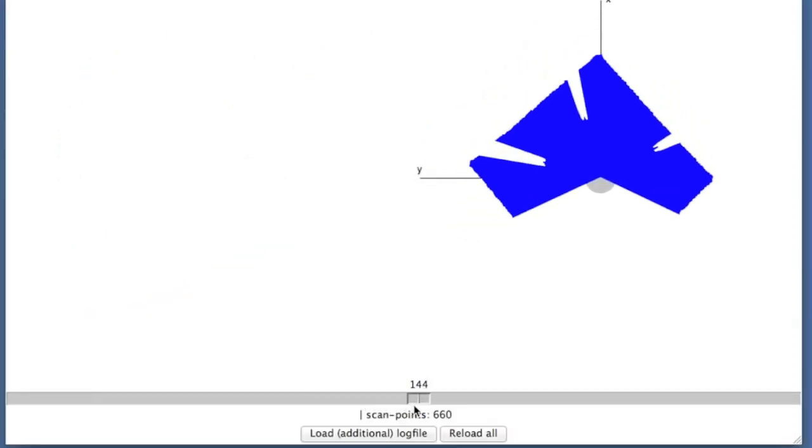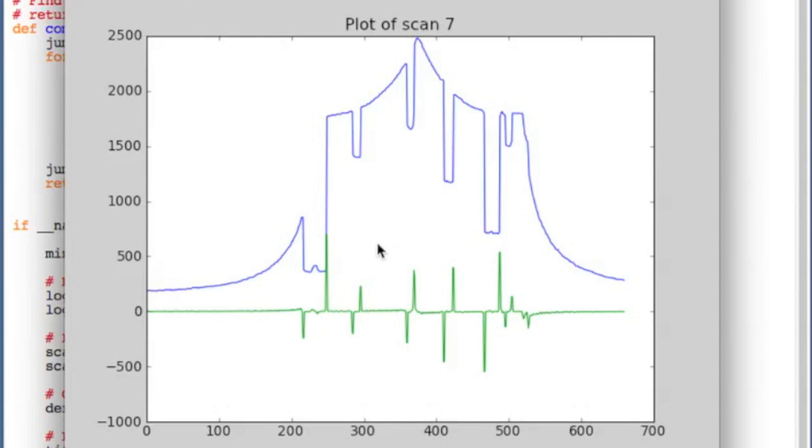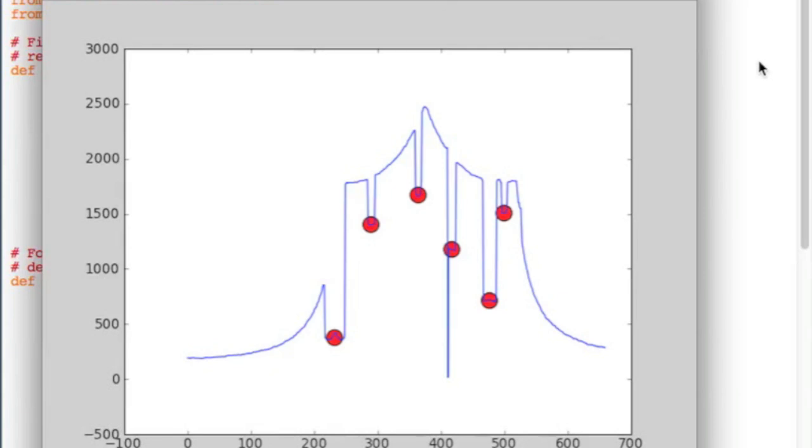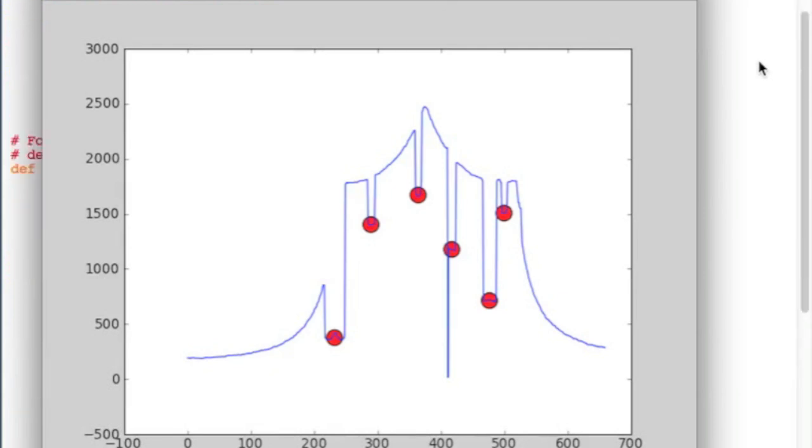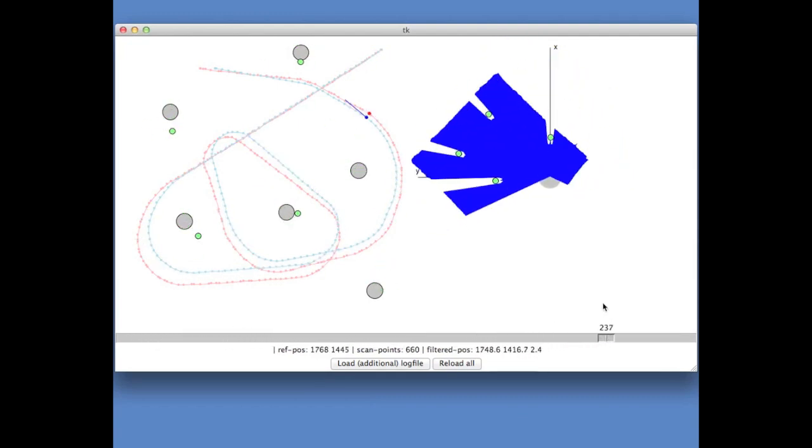Then we will turn to the robot's LiDAR data. We will analyze each scan in order to find the cylinders in the scene and we will develop an algorithm for that. Finally, we will reproject the detected cylinders into the scene and compare them with the cylinder positions given in our map.